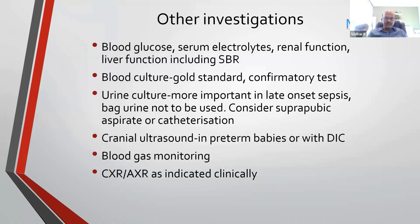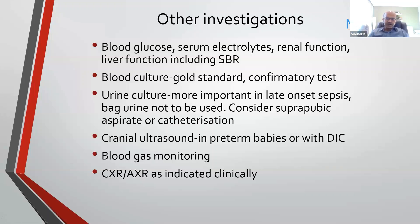Most of these babies improve with time. Blood culture is the gold standard, and urine culture is important especially in late onset sepsis. The sample collection is difficult in babies — you can do a urine bag sample for cell count, but remember that nitrites in newborn babies may not be reliable and bag urine for culture should not be used. If considering UTI based on cell count, you do a suprapubic aspirate or catheter sample. Cranial ultrasound is important in preterm babies or babies with DIC for associated intraventricular hemorrhage or parenchymal bleed. Acidosis can happen with metabolic acidosis.